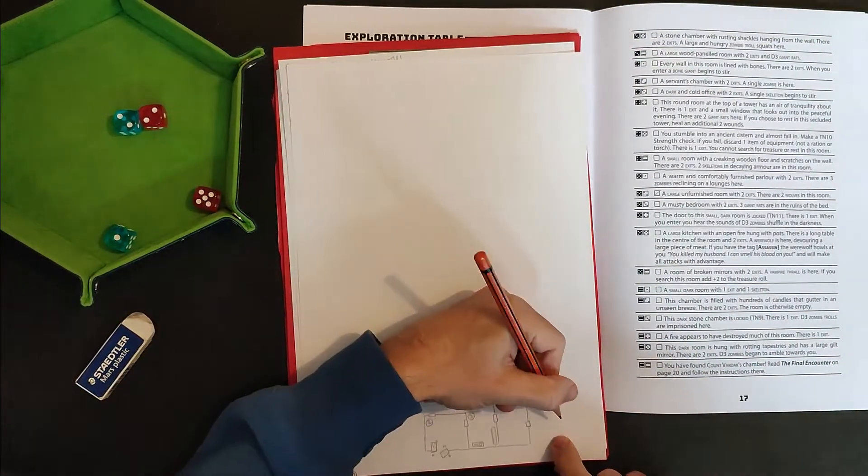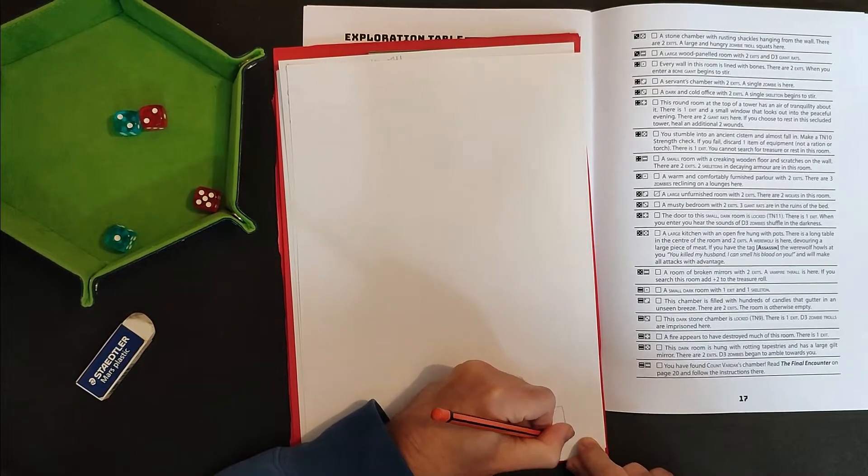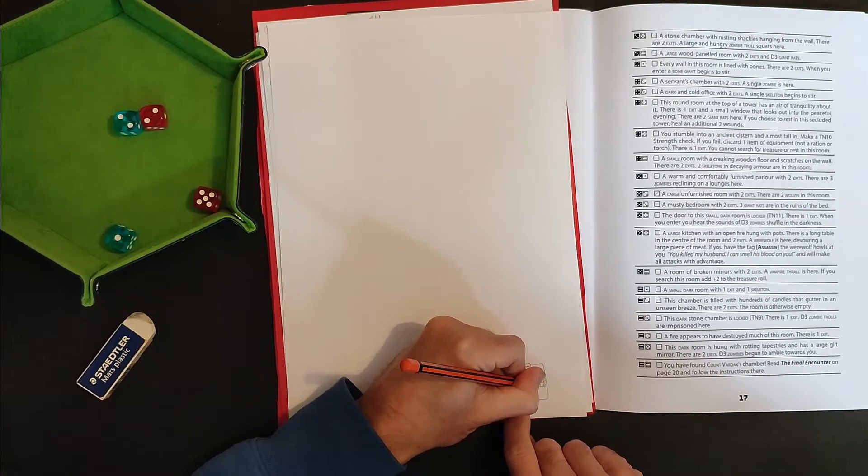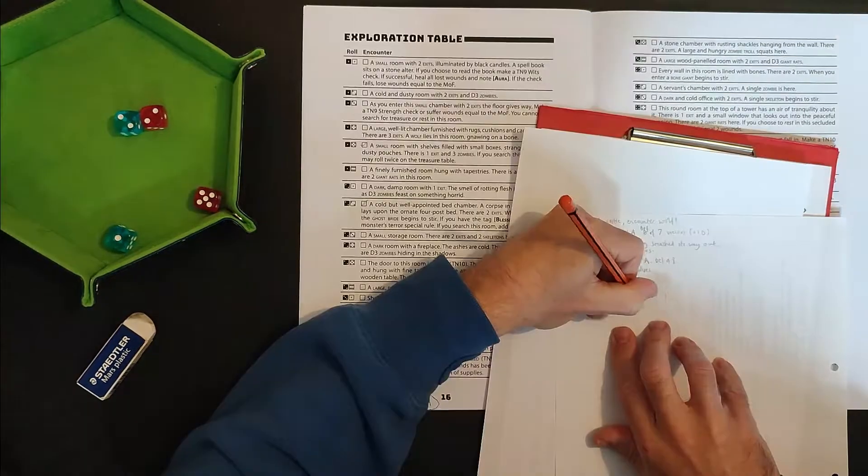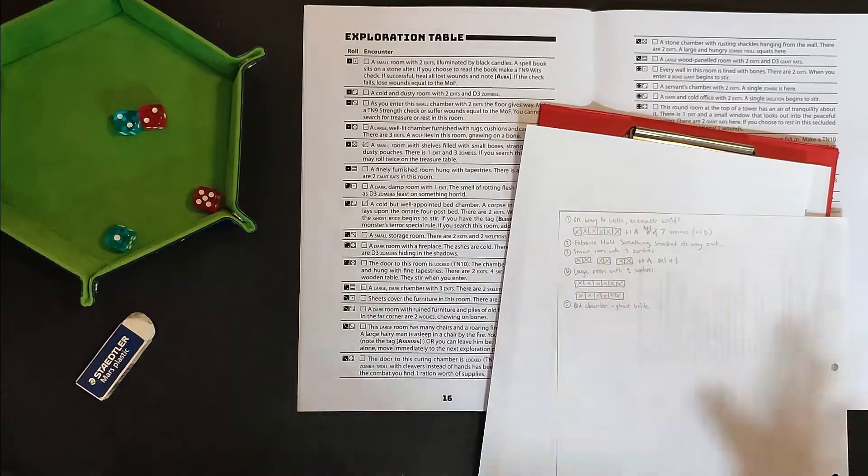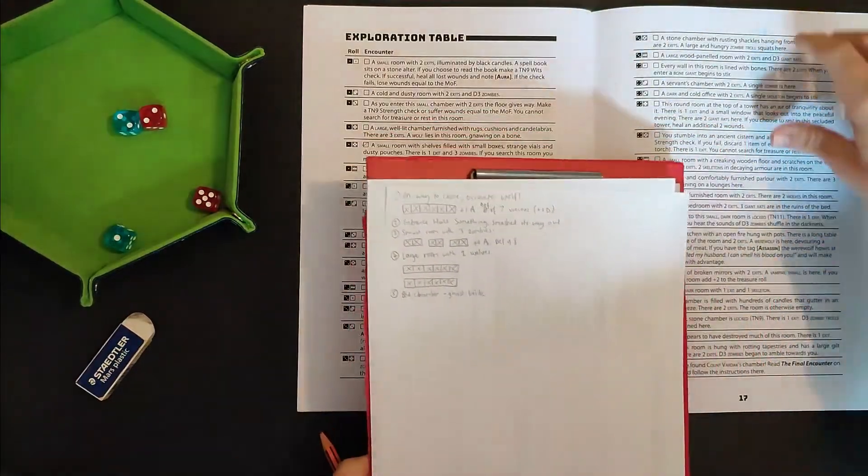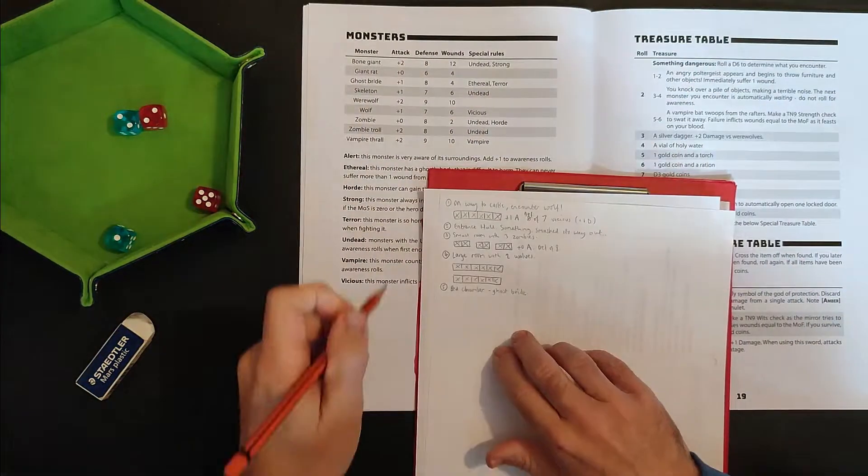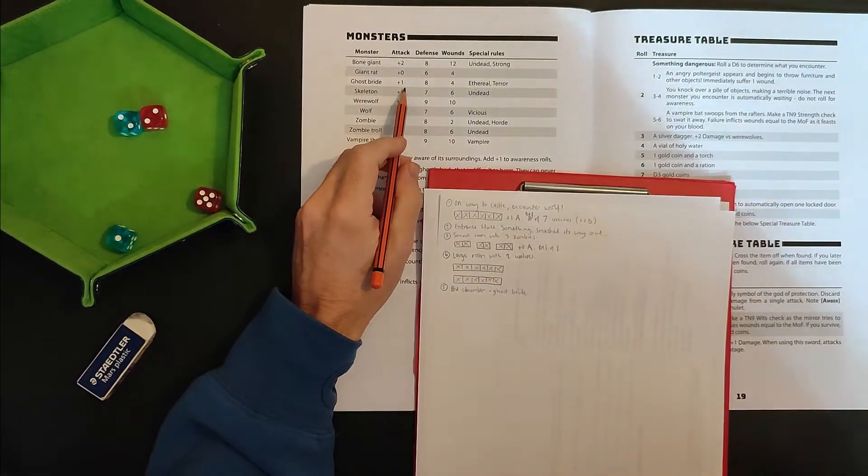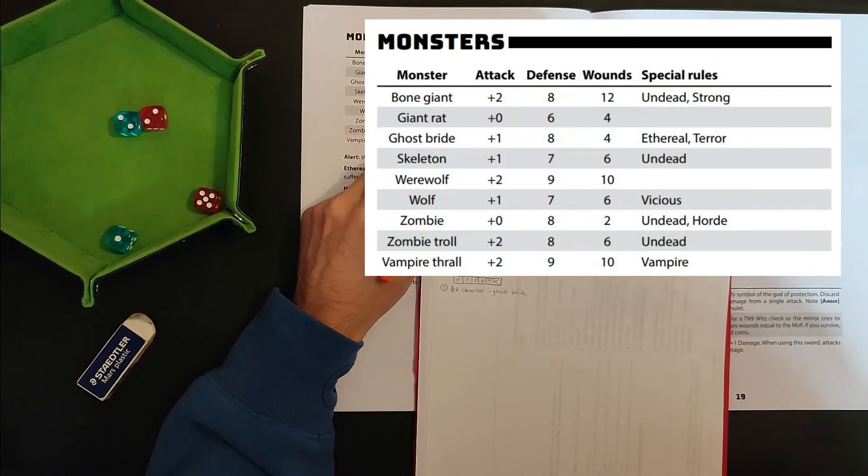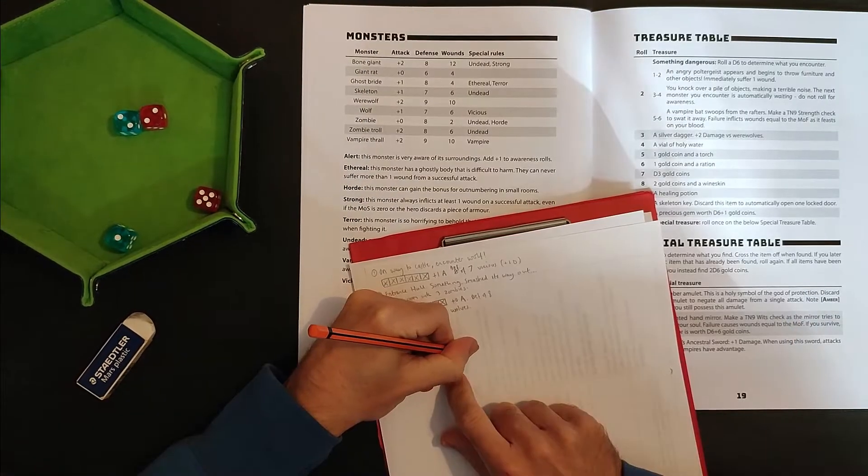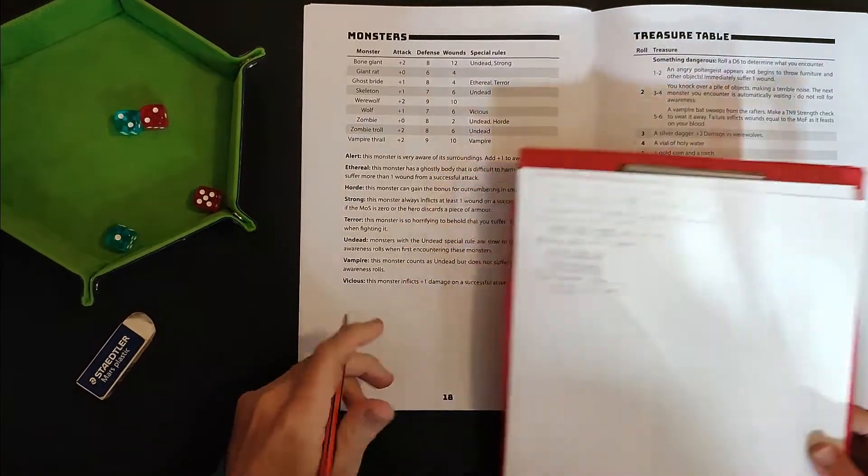I'm going to say I went through here. There's my bed. I'm not going to draw the corpse on it. Tell you what, the ghost bride sounds scary. So I am glad I healed up to 13 hit points. Let's have a look. Ghost bride. Plus one attack. Eight defense. Four wounds. Okay, so not too many wounds. Ethereal and terror. Defense of eight. Now what do ethereal and terror mean?